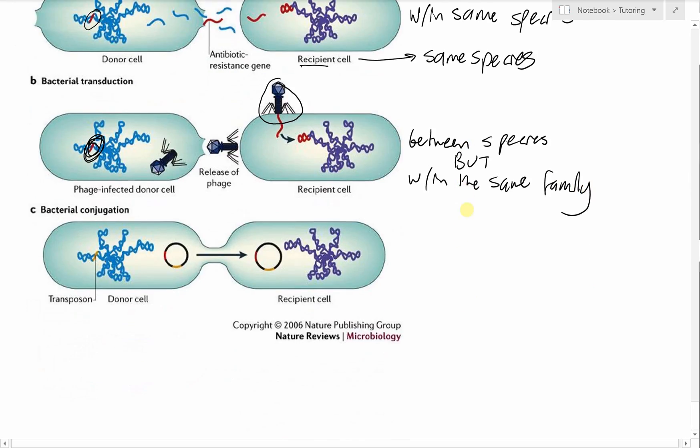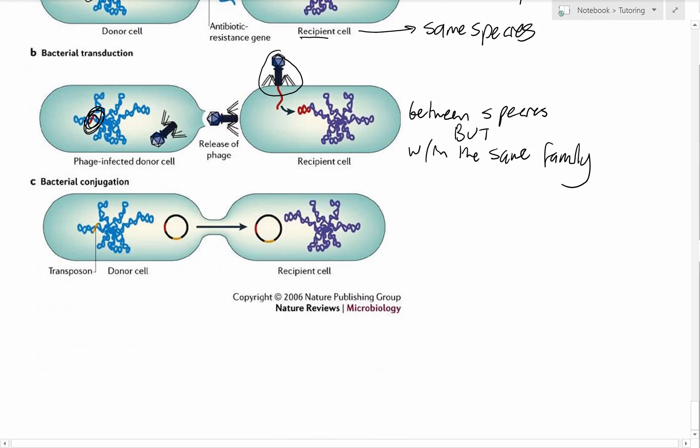Finally, we have bacterial conjugation. This is plasmid mediated conjugation. These plasmids here contain genes that allow the coding and formation of this thing here called a cytoplasmic bridge.